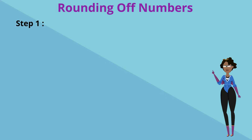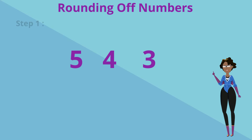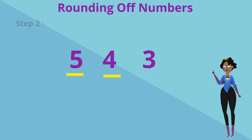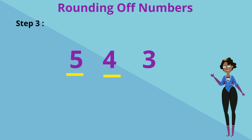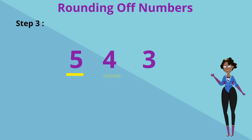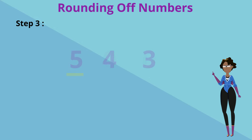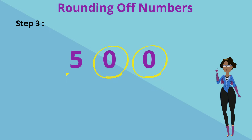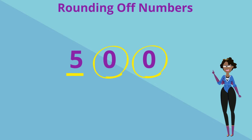Step 1: underline the hundred's digit. Step 2: look at the tens digit. Step 3: if that tens digit is less than 5 — meaning 4, 3, 2, or 1 — then the hundreds digit remains the same and zero replaces the tens and the ones.